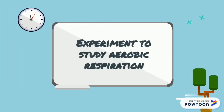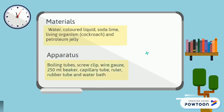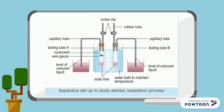Now we will continue with the experiment to study aerobic respiration. The materials for this experiment are: water, colored liquid, soda lime, living organisms such as a cockroach, and petroleum jelly. The apparatus includes: boiling tubes, screw clip, wire gauze, 250 ml beaker, capillary tube, ruler, rubber tube, and water bath. This is the apparatus set up to study aerobic respiration.